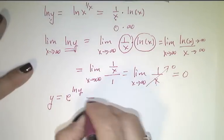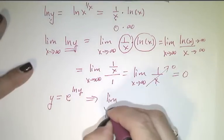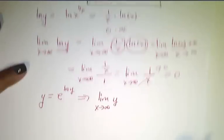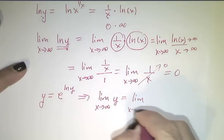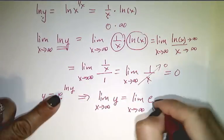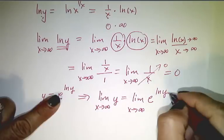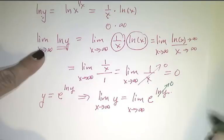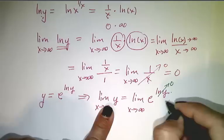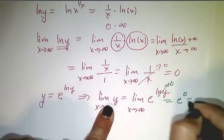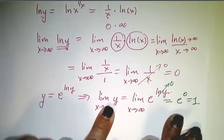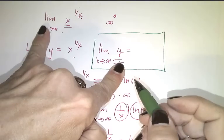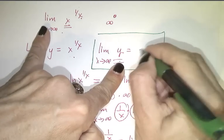The limit as x approaches infinity of y equals the limit as x goes to infinity of e to the ln of y. We just discovered that as x goes to infinity, ln(y) goes to 0. So this limit equals e to the 0, which is 1. That's the limit we were looking for: the limit as x goes to infinity of x to the 1 over x is 1.